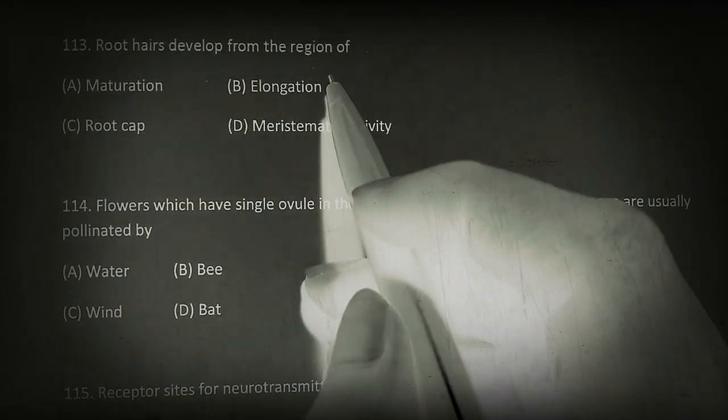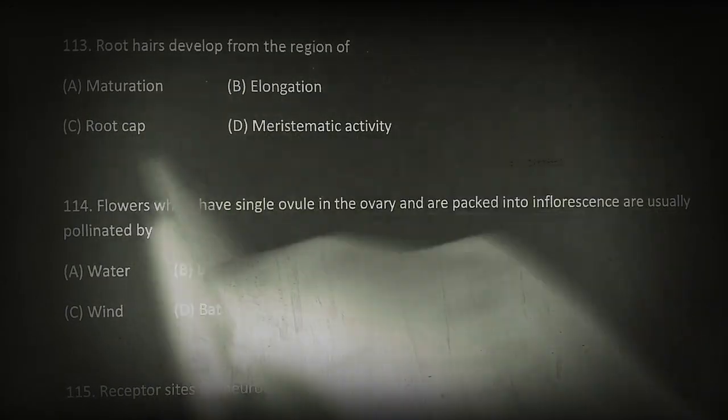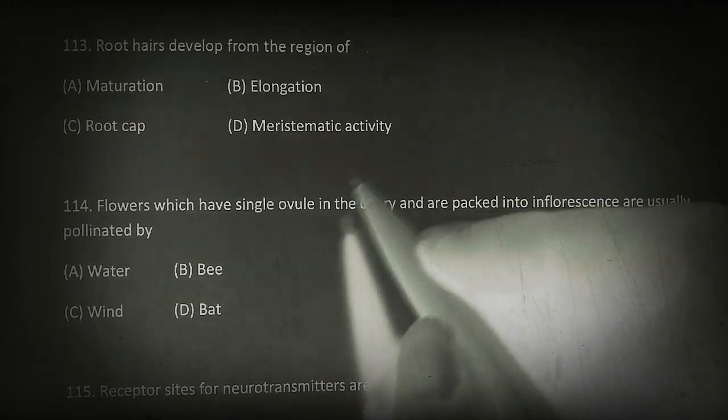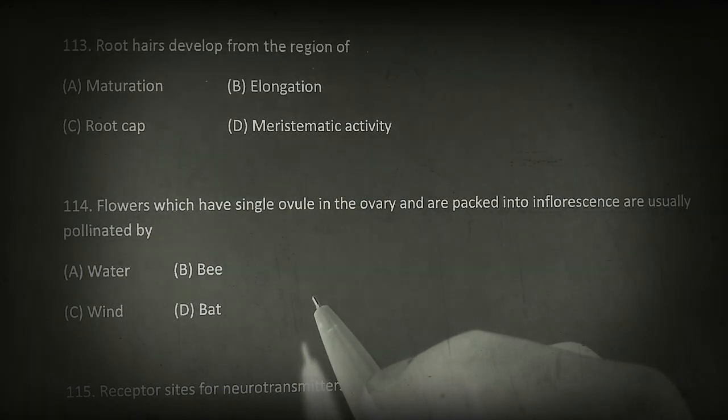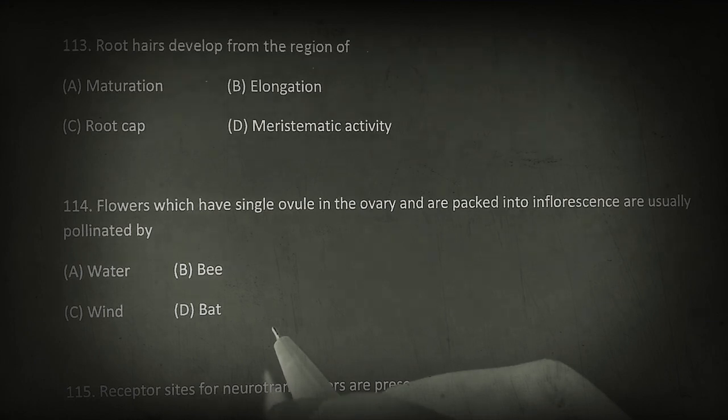Root hair develop from the region of maturation, elongation, root cap, or meristematic activity. Root hairs are lateral tubular outgrowths that develop from the outer cells of the zone of maturation, which is also known as root hair zone.